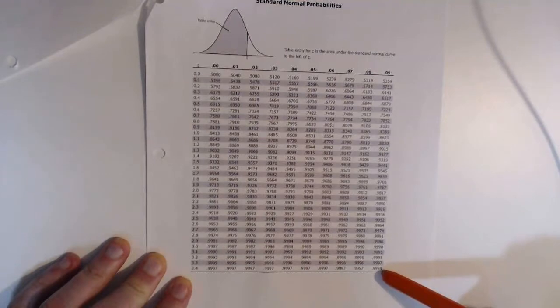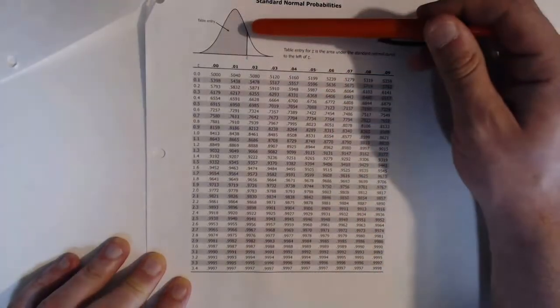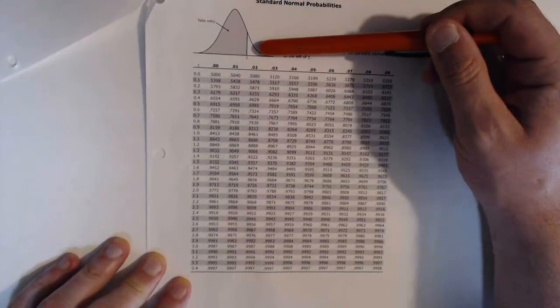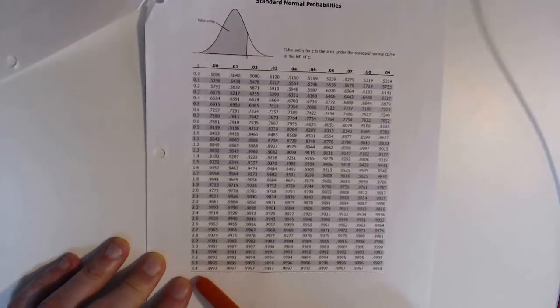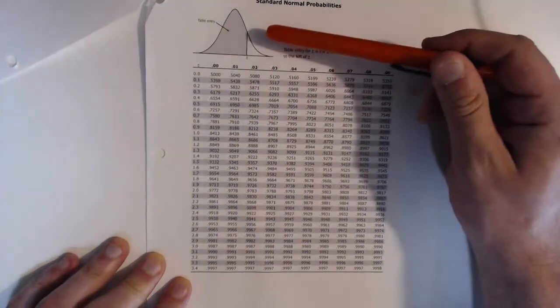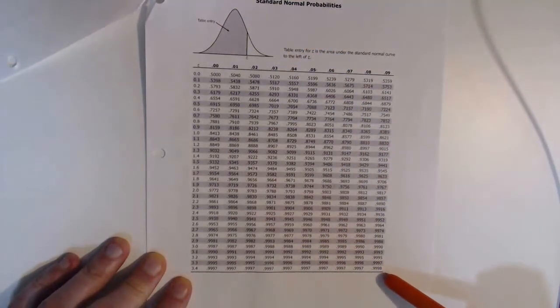And so what it represents is almost the entire complete curve. So you can think about the area of the curve when Z is 3.49 is almost 1, or specifically it's 0.9998.